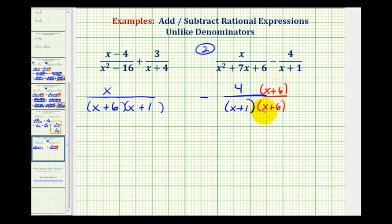And now that we have a common denominator, we can subtract by keeping the denominator the same and subtracting the numerators. So we'll have the quantity x plus six times the quantity x plus one.